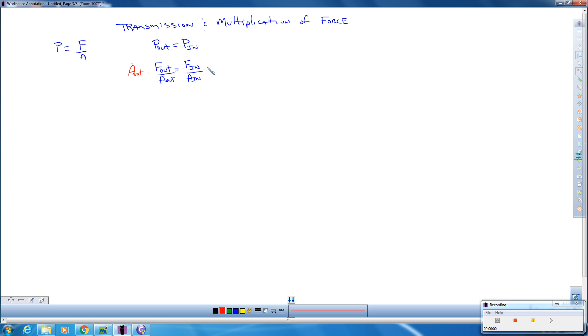So we're going to cancel this. So our output force, our force out, is equal to our force in divided by our area of our input times the area of our output. And this is our pistons, and this is our force.